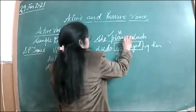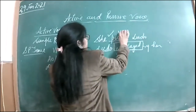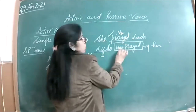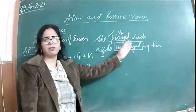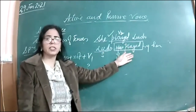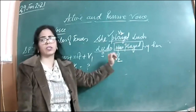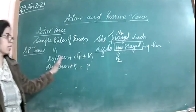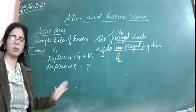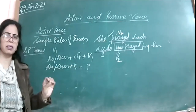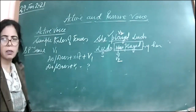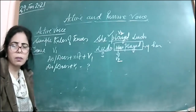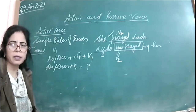We always use the third form of the verb in passive voice everywhere, but the tense remains the same. If she played ludo — past tense — then in passive: 'Ludo was played by her.' 'Was' is the second form, and 'played' is the third form of verb. We'll talk about the rules in detail tomorrow or on Monday. This much is enough for now — just understand the difference between active and passive voice.